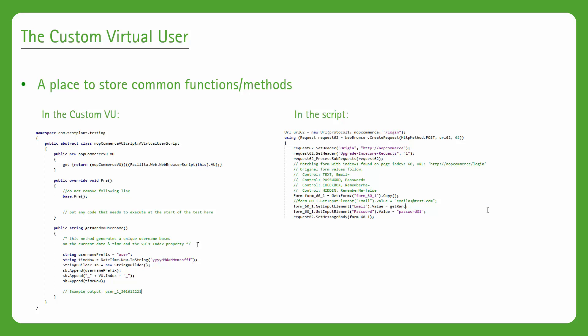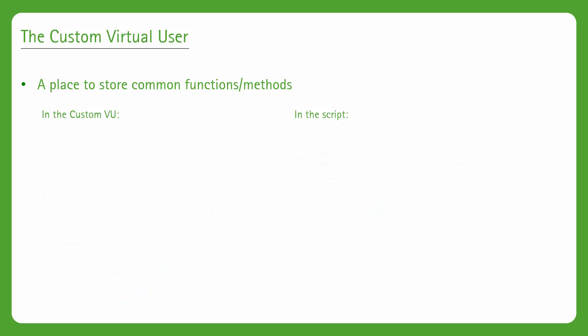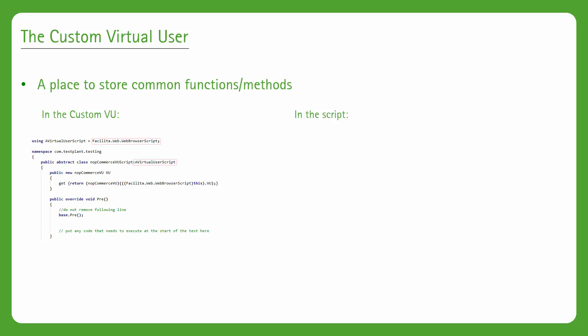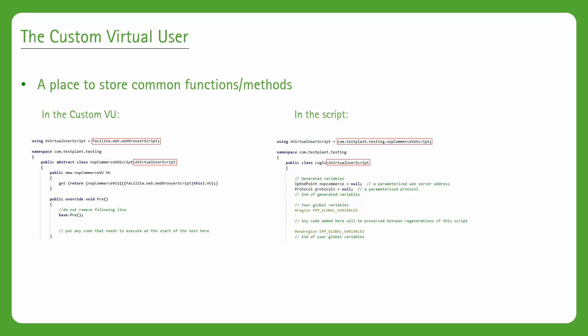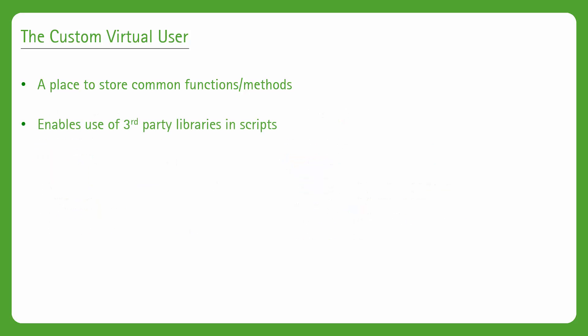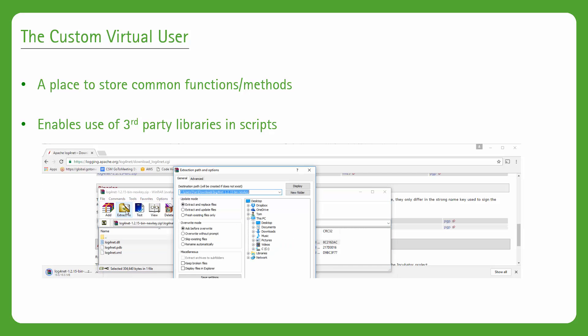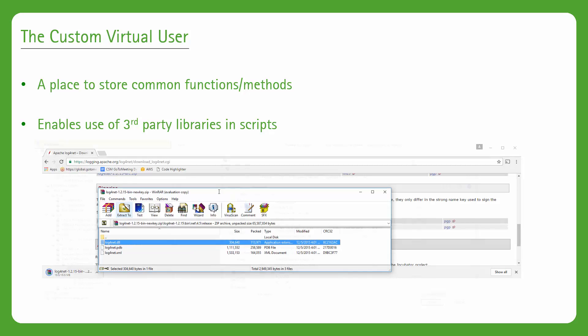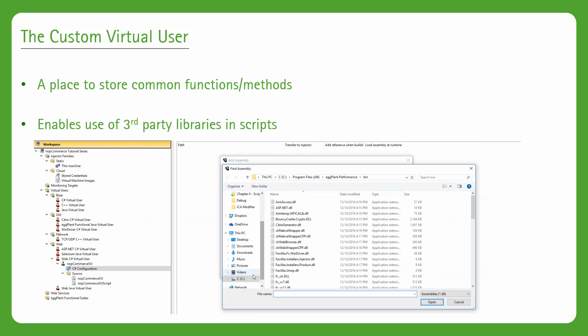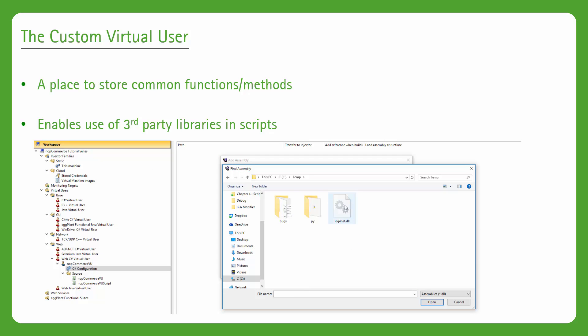Behind the scenes, what's happening is called inheritance in object-oriented programming. Every script you create normally inherits the capabilities of whichever VU you select, for example the web VU. But as soon as you create a custom VU, scripts will instead inherit from the custom VU, and the custom VU in turn inherits from the base VU. The custom VU also allows you to reference third-party libraries — making code in those libraries available in your scripts. For C#-based scripts these manifest as DLLs, and for Java-based scripts as JAR files.